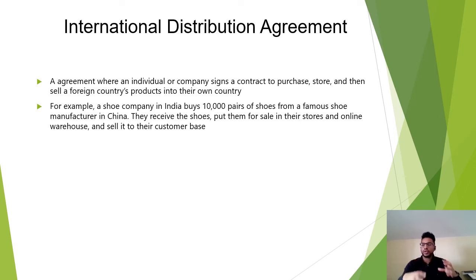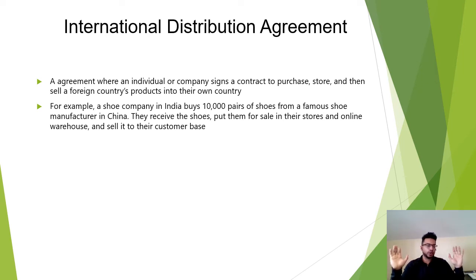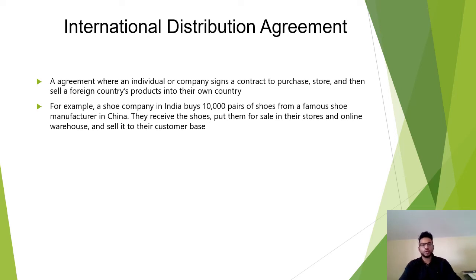In a distribution agreement, you approach a large company and say you want to sell their product in your country to your customer base. They give you a wholesale price — for example, an order of 10,000 or 100,000 units shipped to you at a wholesale rate.